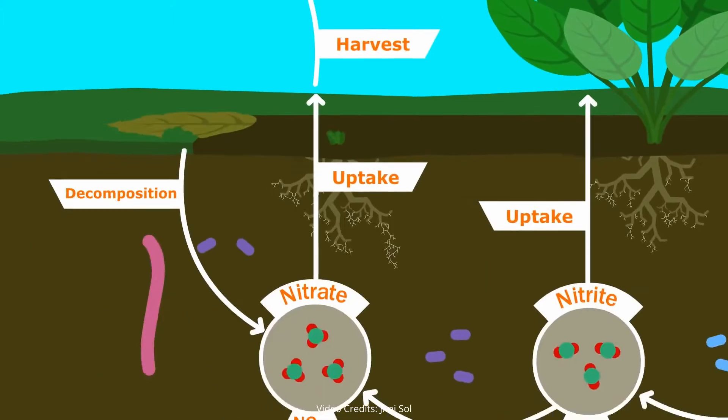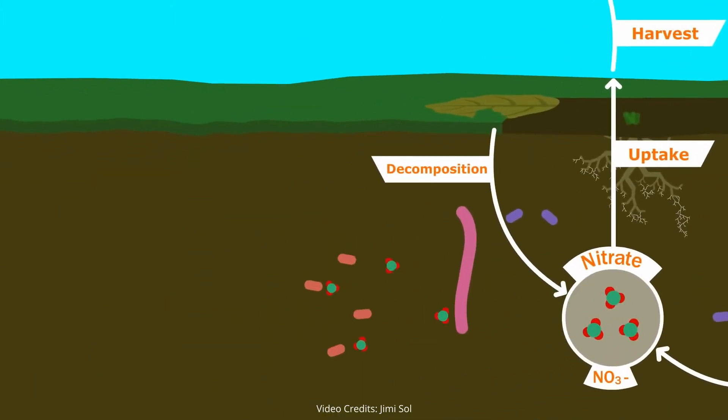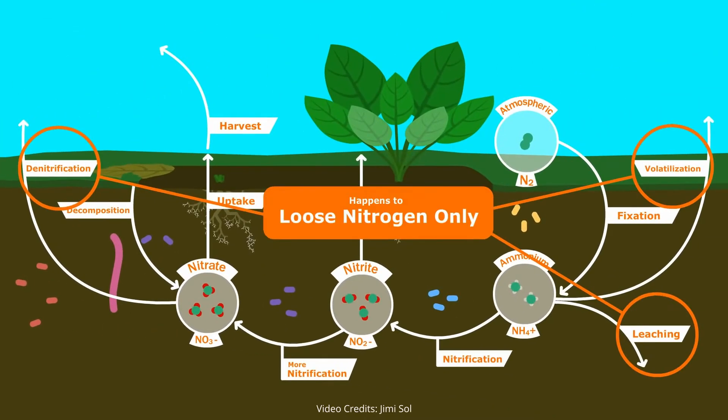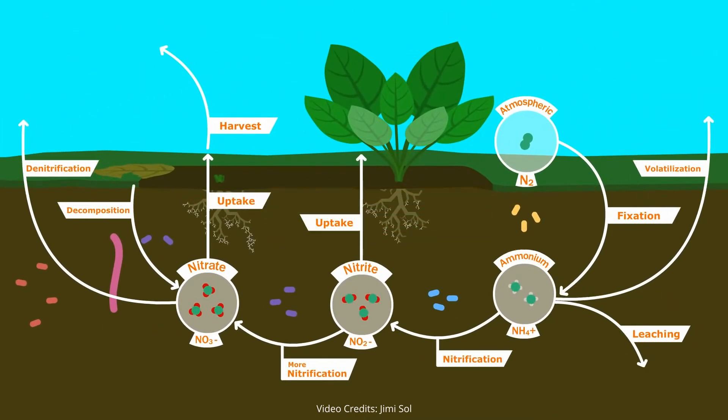Or if the soil lacks oxygen, different anaerobic bacteria grow, which convert nitrates back into atmospheric nitrogen. Notice that these things only happen with loose nitrogen in the soil, not with nitrogen inside organisms.